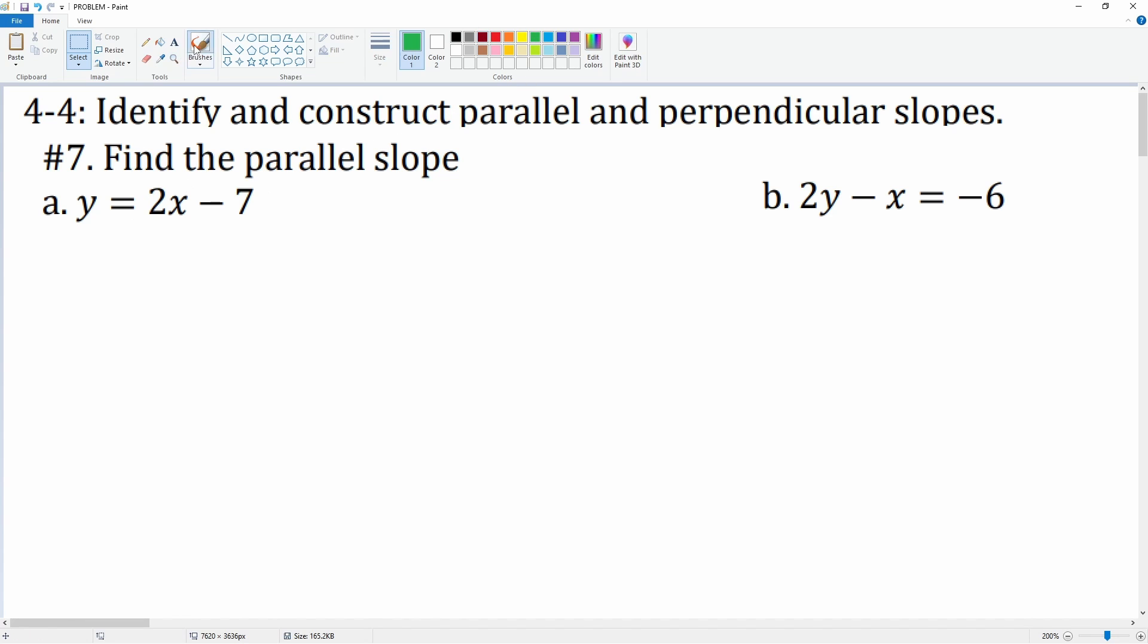We notice that this is going to be the slope, so we can say that the original slope is 2. So the new parallel slope, because that's what we're trying to find, is also m equals 2.